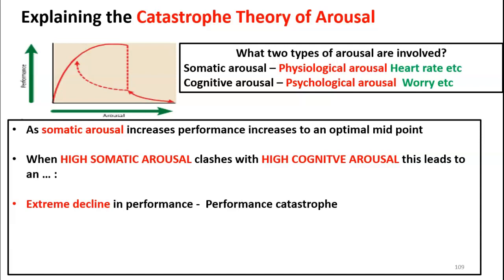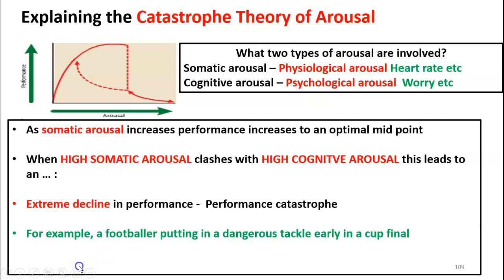For example, a football player who is super pumped up before a cup final — in the first few minutes they are so worried about failing and not winning the game, they are pumped up physiologically and psyching themselves up. If both of those things collide, it might result in a mistimed or dangerous tackle early in the game. The high cognitive anxiety is the fear of losing the final; the increased somatic arousal is the extremely high heart rate and breathing rate.